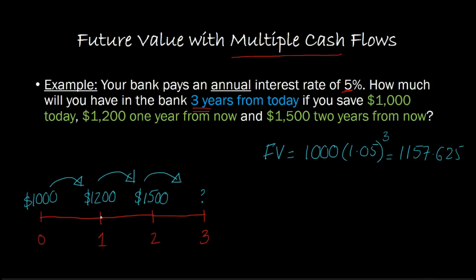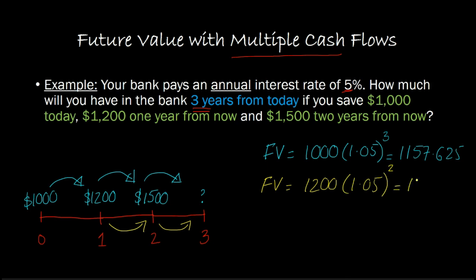But if by the end of year one you deposit $1,200, this $1,200 doesn't earn interest for as long — it only earns interest for two years. So the future value of that would be $1,200 times 1.05 raised to the power of two, which solves out to $1,323. And finally, this last deposit of $1,500 only earns interest for one year, so the future value of that would be $1,500 times 1.05, which solves out to $1,575.